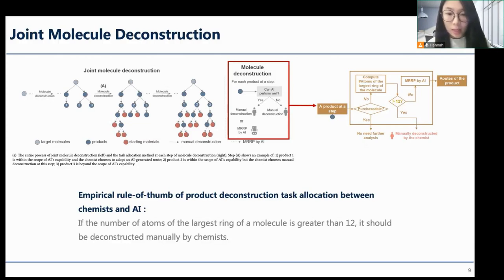That is, if the number of atoms of the largest ring of a molecule is greater than 12, it usually cannot be performed well by AI models, given such molecular complexity. If the products of a step are such molecules, chemists should perform the deconstruction at this step manually. Otherwise, based on their preferences, chemists can choose manual deconstruction at the step or employ an AI model to automatically finish the MRRP of the products at the current and remaining steps.